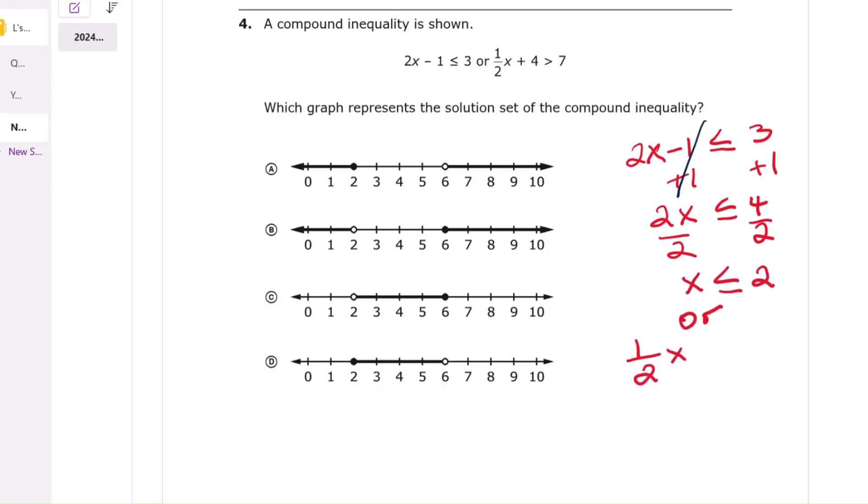Step 2: Solve the second inequality 1 half x plus 4 is greater than 7. Subtract 4 from both sides. That gives 1 half x is greater than 3. Multiply both sides by 2. That gives x is greater than 6.